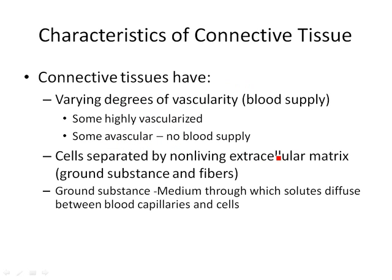Connective tissues can be very different — they're not all the same. One thing you'll look at is how much blood supply, which we call vascularity. Some are highly vascularized, meaning they have a lot of blood supply. Some are avascular, which means they don't have a blood supply at all. One you can think of immediately that's avascular is cartilage.